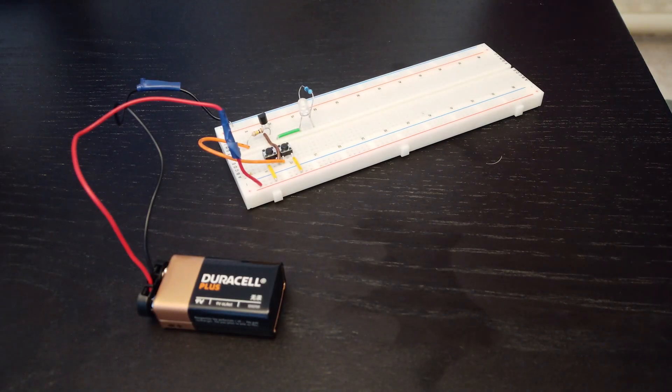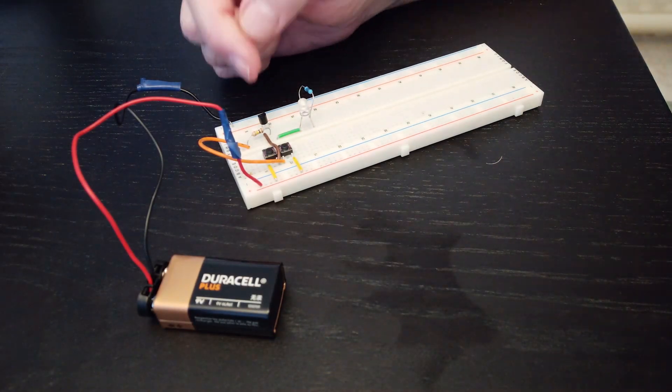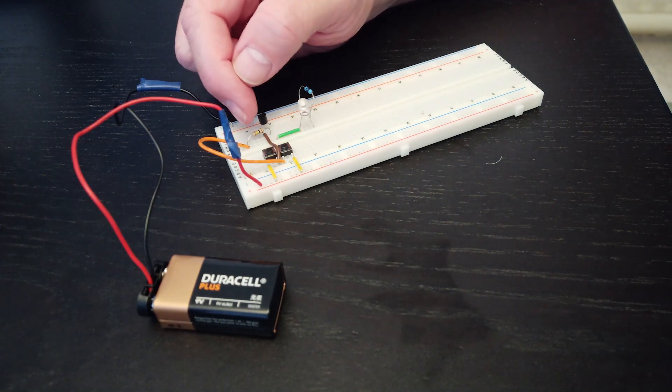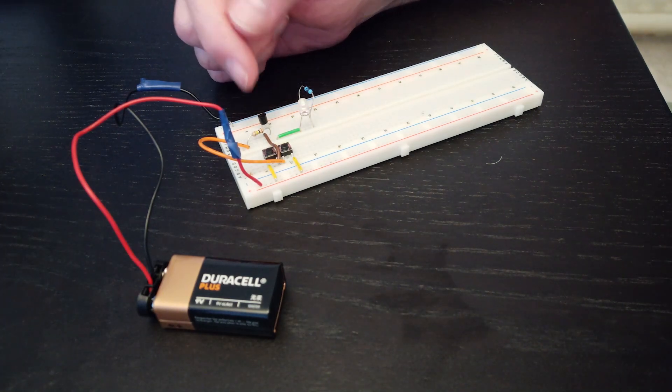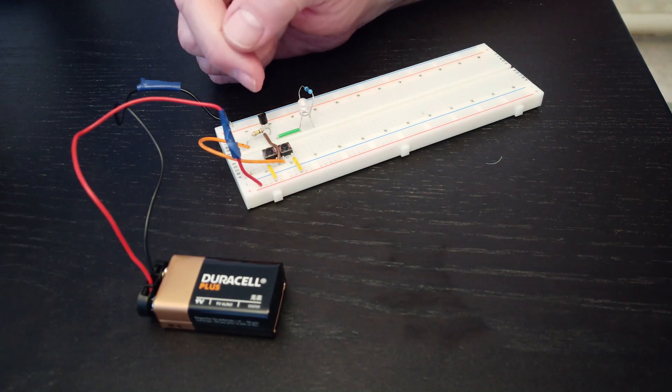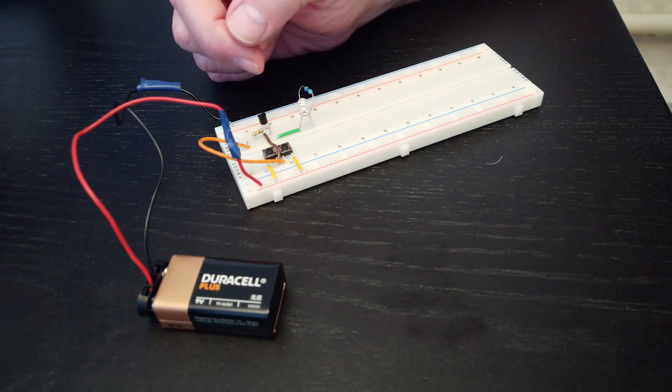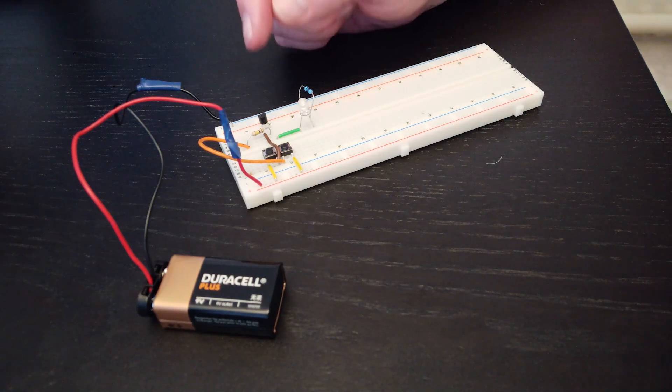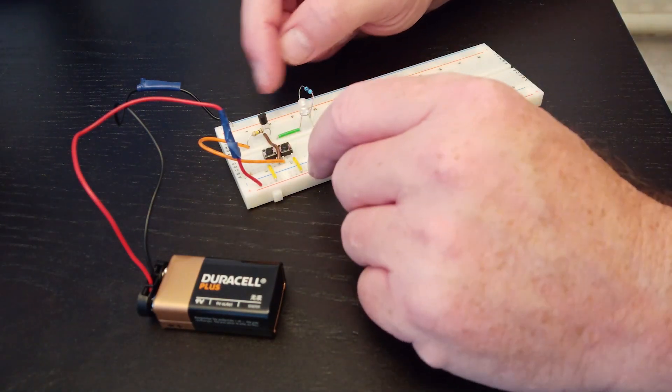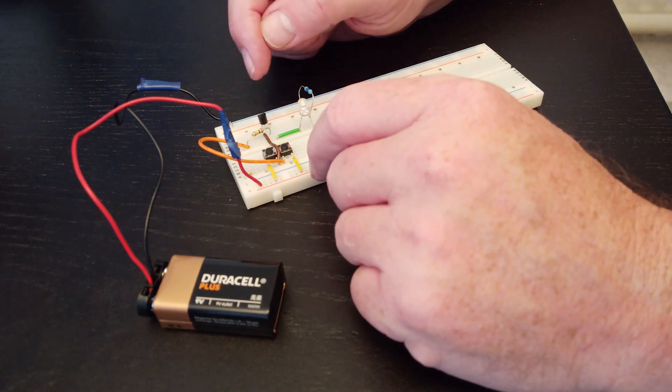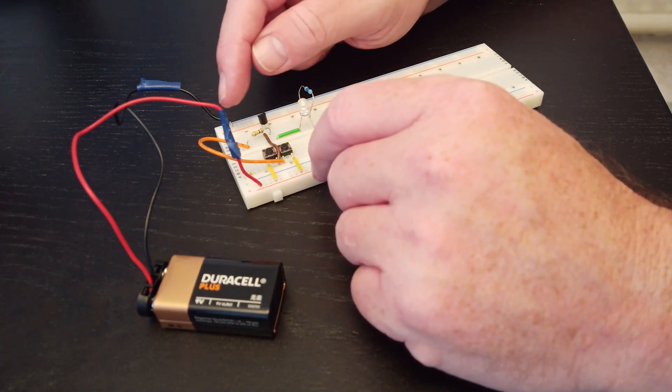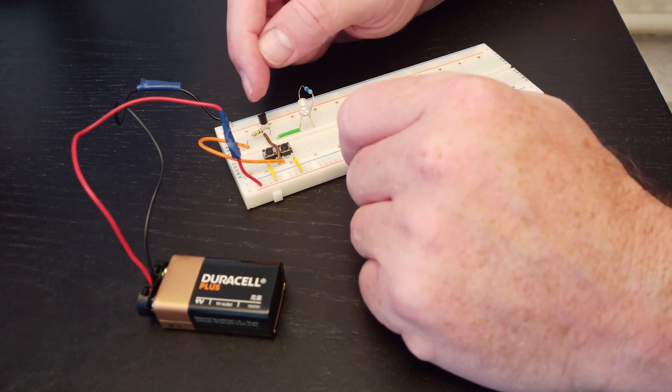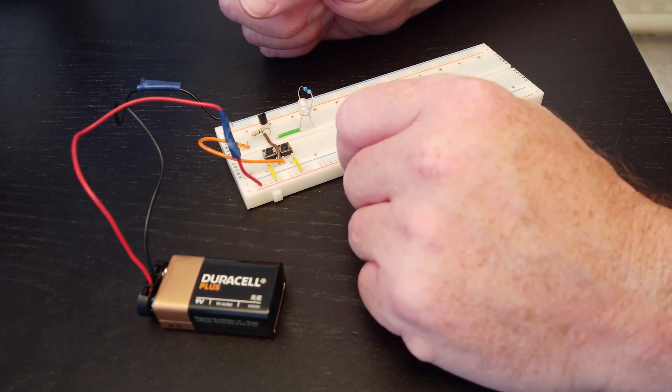Just as with the relay, to make the relay switch between the contacts we had to supply power to the relay coil. Here to make the transistor switch on and off we had to supply and remove power to the base pin. The other significant thing about this circuit is that the supply to the base is coming through this 100k, 100 kiloohm resistor, so it's a very small current flow because of the high value of that resistor.